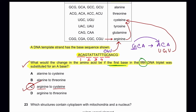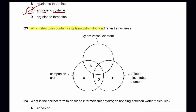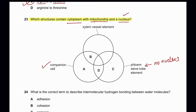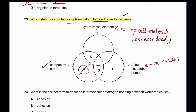Question 23: Which structures contain cytoplasm with mitochondria and a nucleus? Mitochondria, cytoplasm, and a nucleus must all be present. Phloem sieve tube elements have no nucleus. Companion cells have cytoplasm, mitochondria, and a nucleus. Xylem vessel elements are dead cells with no cell material. So option A — companion cell only — is the correct answer.